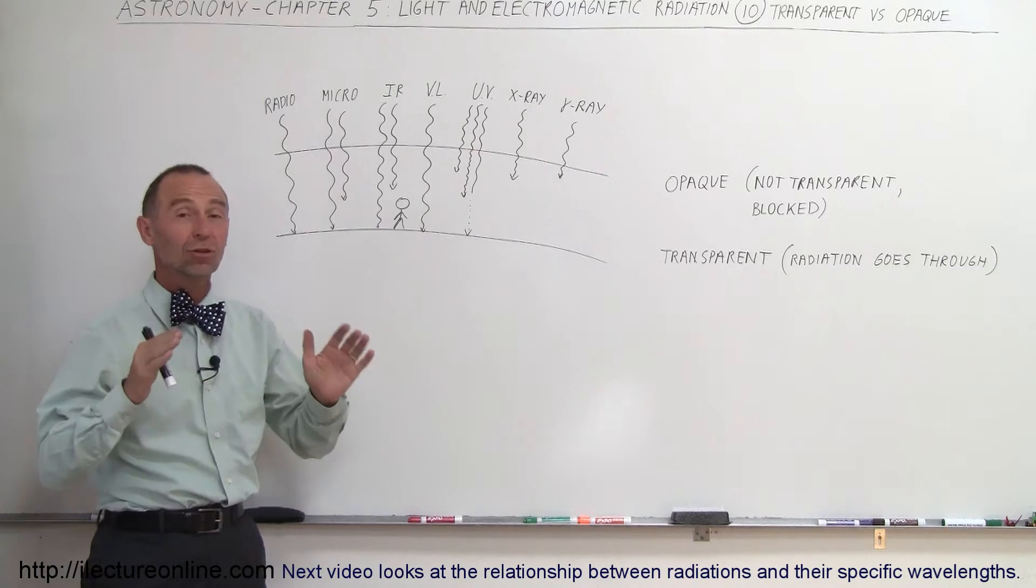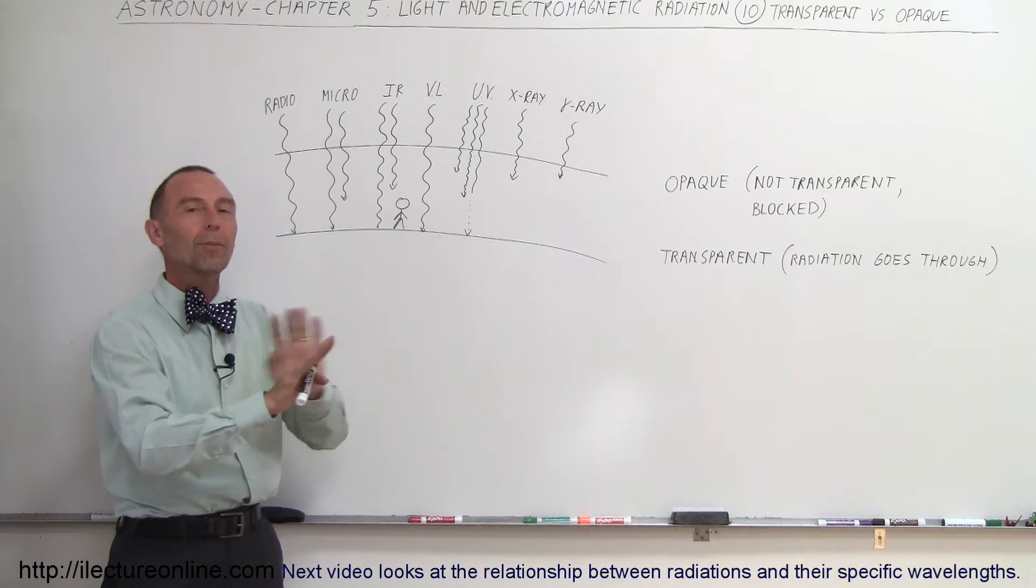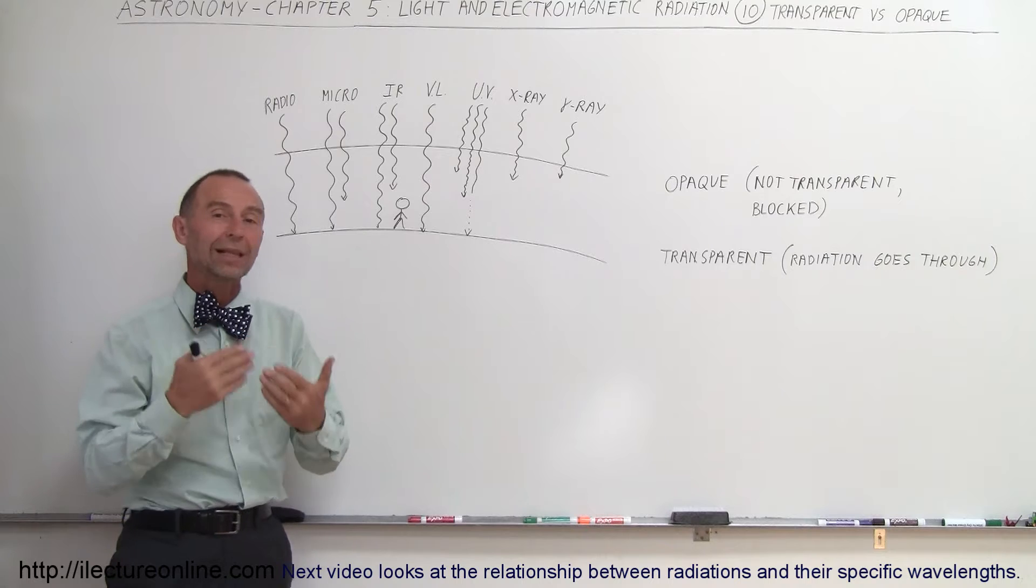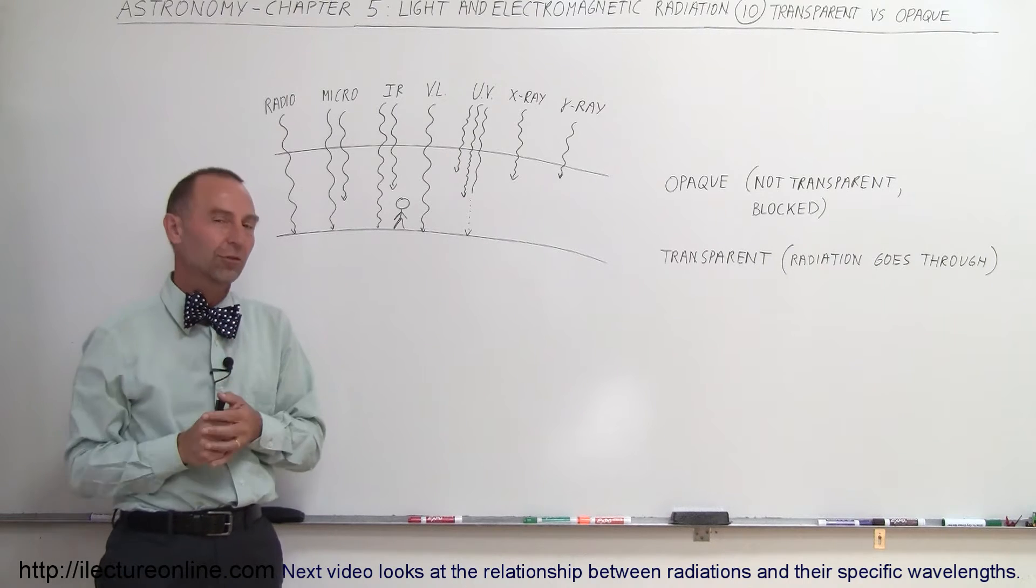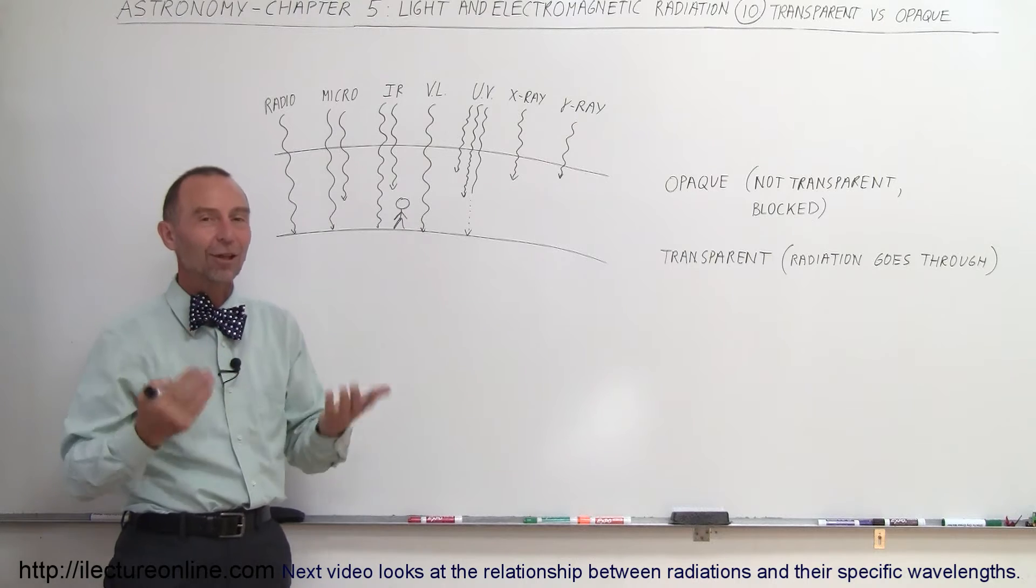Remember, opaque means that the radiation does not go through. It is blocked, it is not transparent, it is somehow stopped through the atmosphere. Transparent, radiation goes readily through it, we can see it all the way down to the surface of the earth. So transparent means goes through, opaque means the opposite, it does not go through.